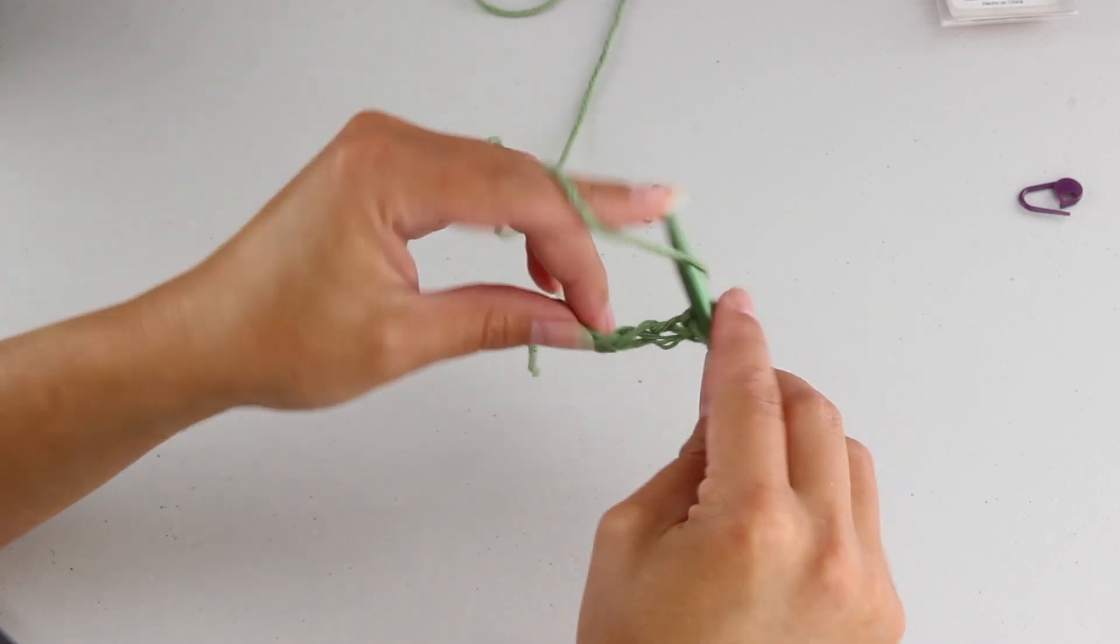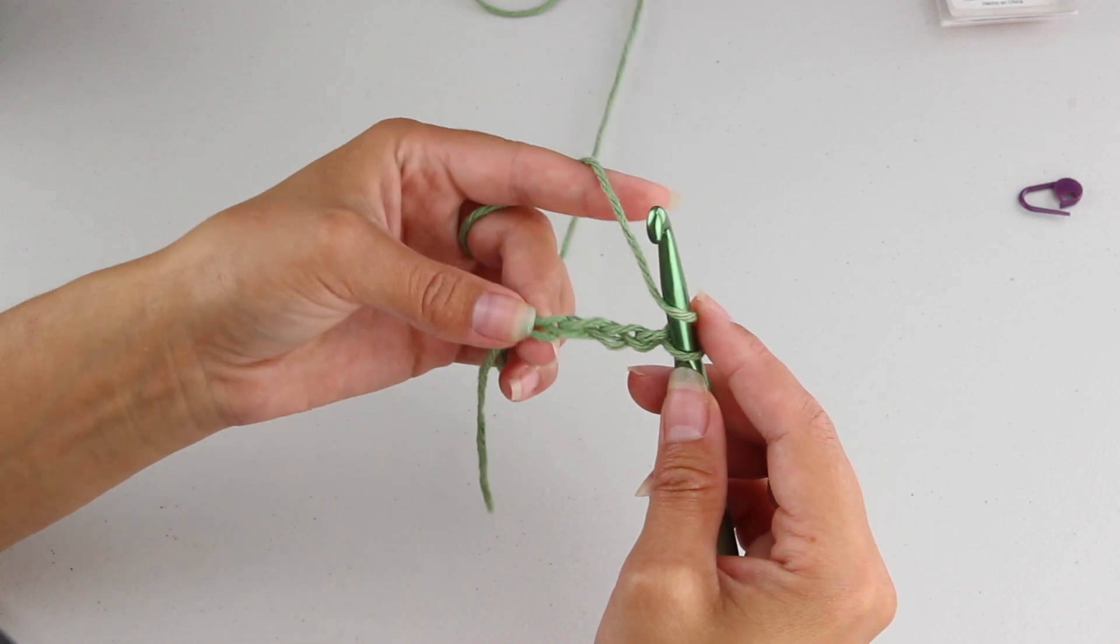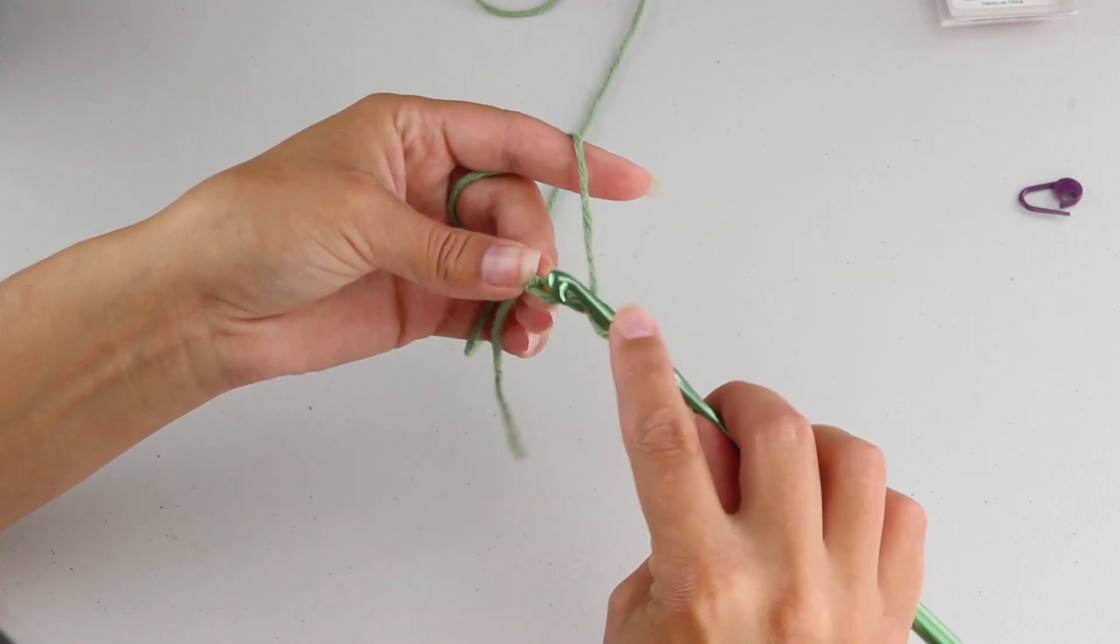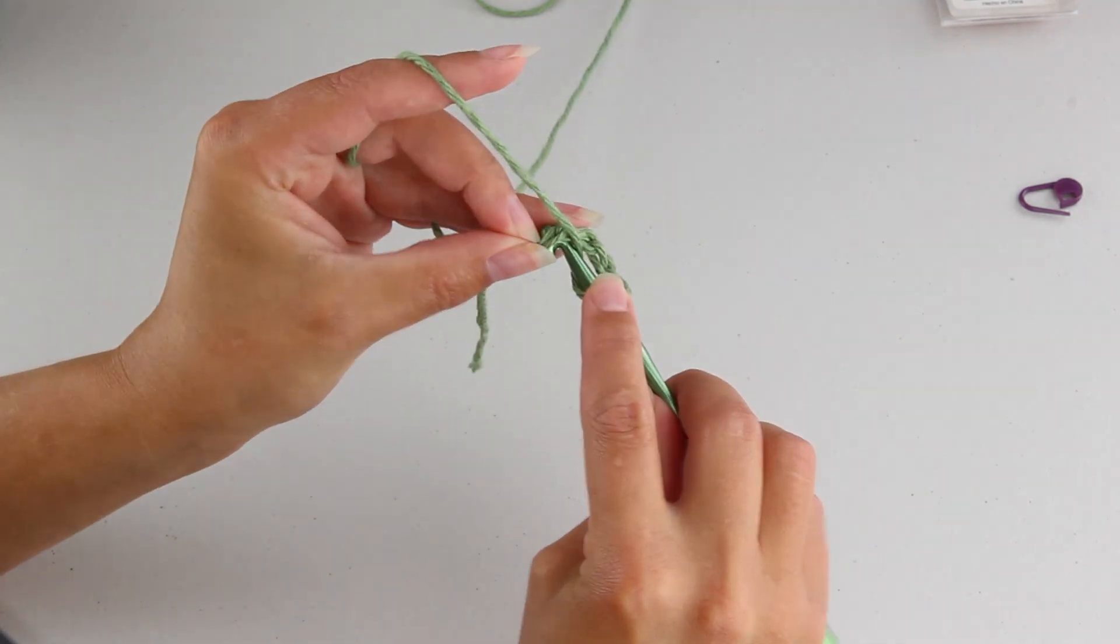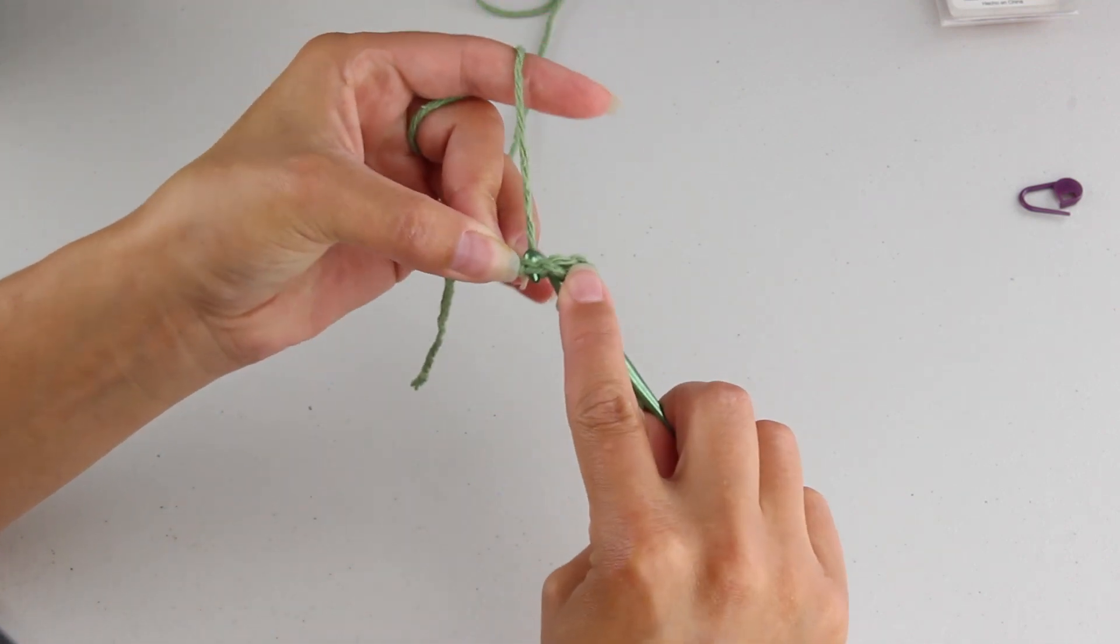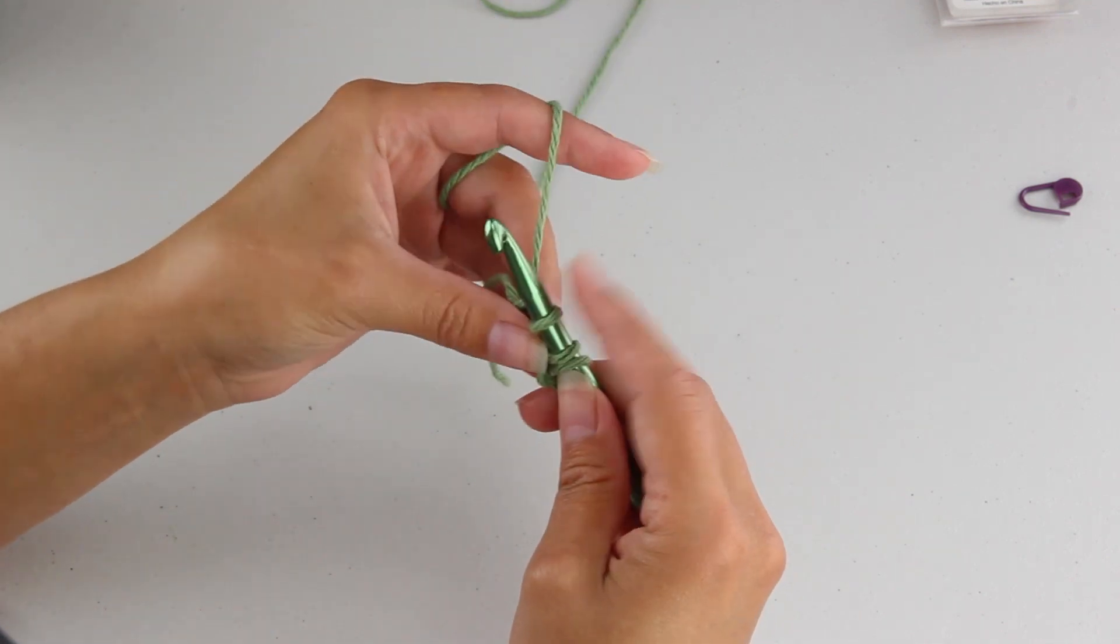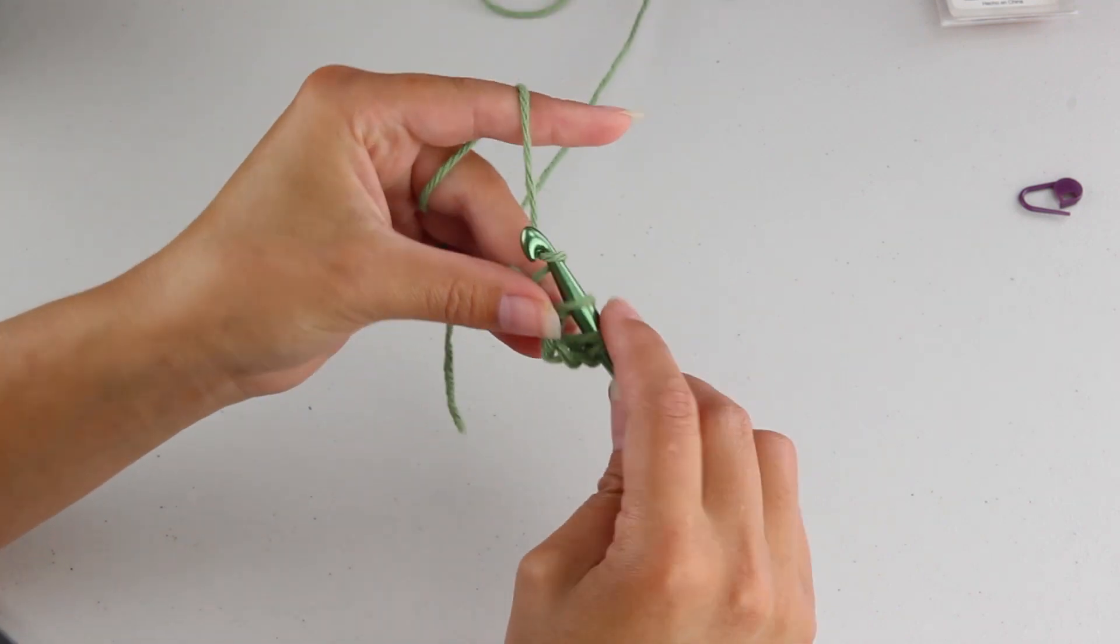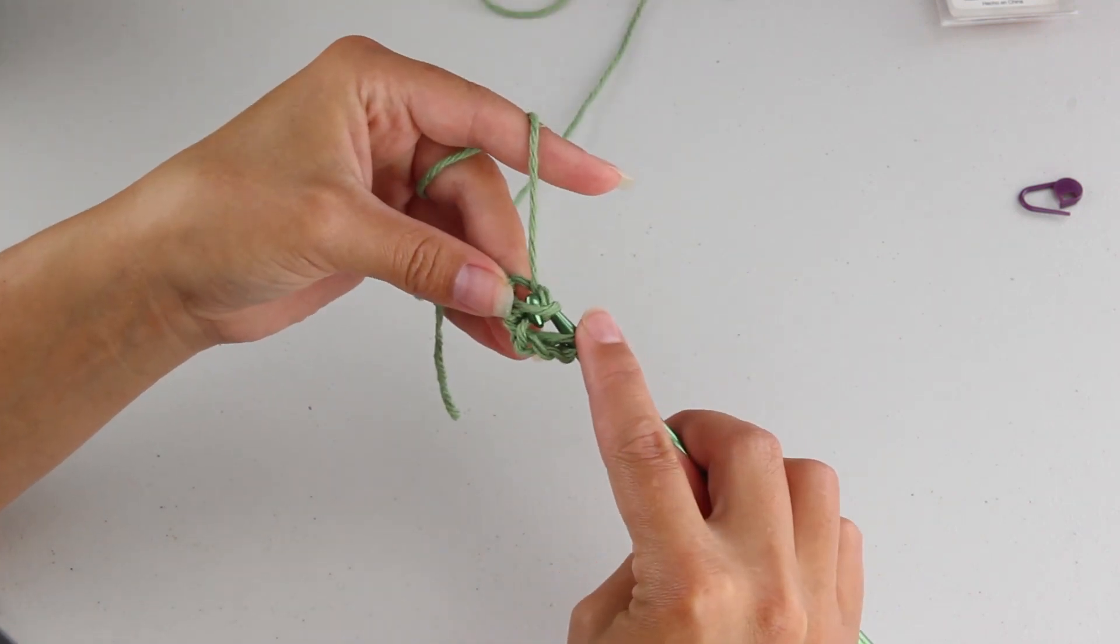You're going to yarn over and you're going to go into your first chain. Yarn over your hook, pull that loop through. Yarn over your hook, pull through one loop on your hook.